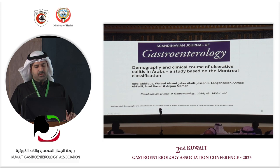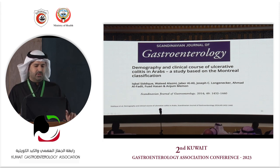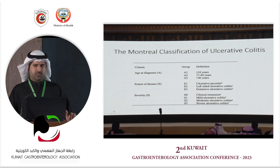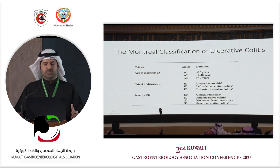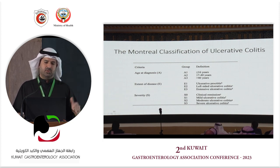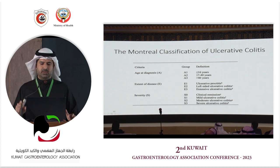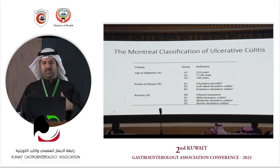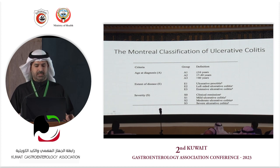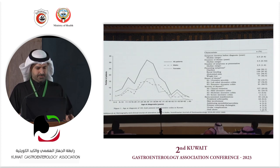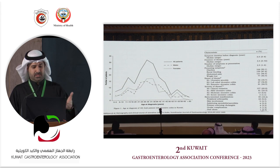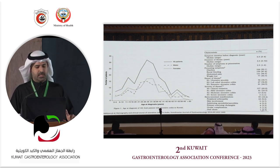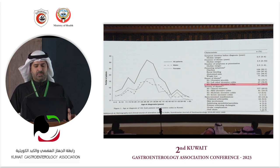A follow-up study by Dr. Sidiqui used the Montreal classification for UC: E1 proctitis, E2 left-sided colitis up to the splenic flexure, and E3 extensive disease beyond the splenic flexure. Results were similar to Dr. Shamali's publication — mean age in the 30s, about a decade older than Crohn's patients, and around half presenting with pancolitis.